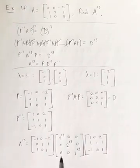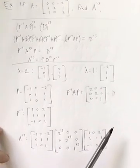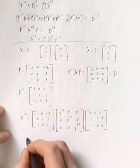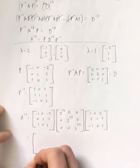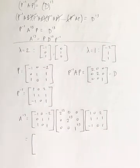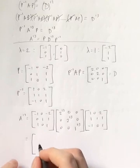And 2 to the 13th is 8192. So at this point, you could just multiply all of these matrices together. I will save that verification for you, but I will tell you what the answer ends up being at the end.